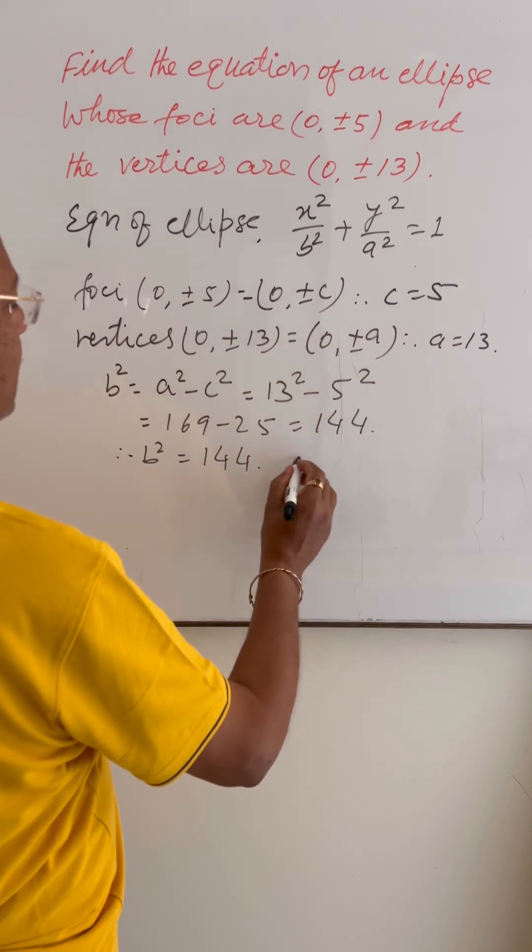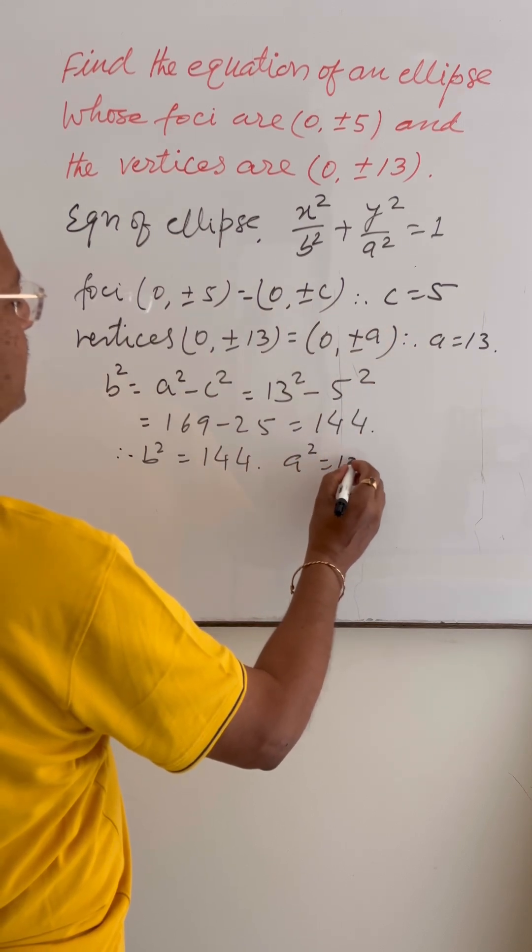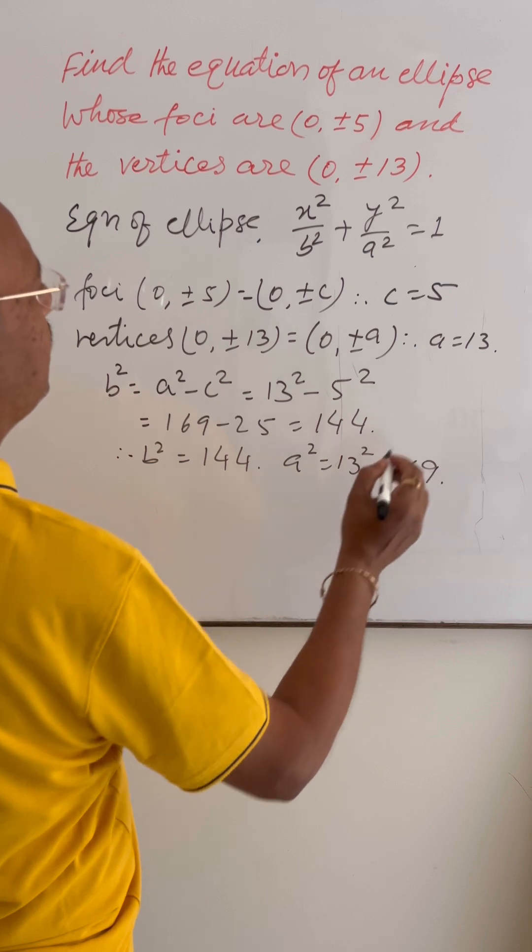And a is 13. So a² is 13², which is 169.